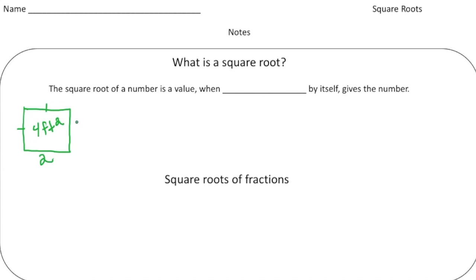The only answer is two times two, so the square root of four in this case would be two. The square root of a number is a value that when multiplied by itself gives that number. There's also a symbol we use for square roots — it looks like this.